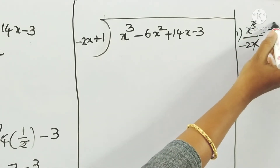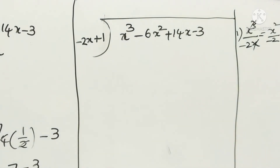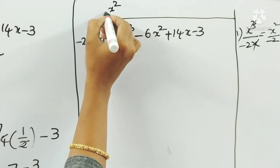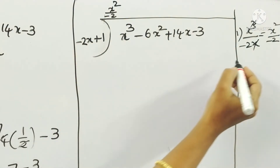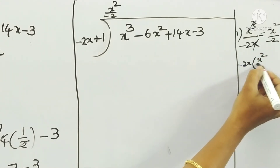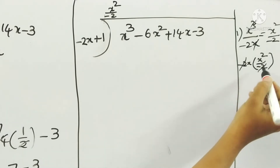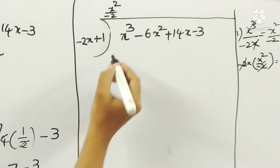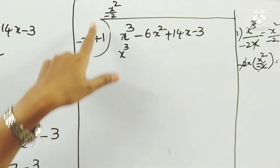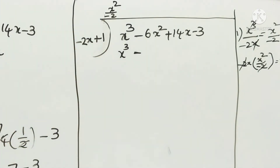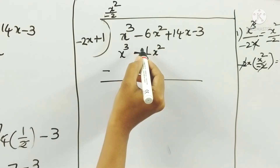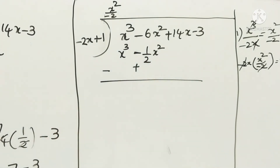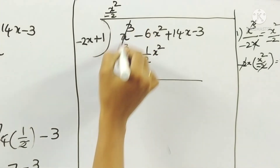For the first term of the quotient, take the first term of the dividend: x³ (highest degree), divided by minus 2x. x and x cancel, giving x² by minus 2. Write x²/(−2) in the quotient. Now minus 2x into x²/(−2): minus 2 and minus 2 cancel, x times x² gives x³. So we get x³, plus into minus gives minus (1/2)x². Subtracting: same terms cancel, leaving zero for those terms.